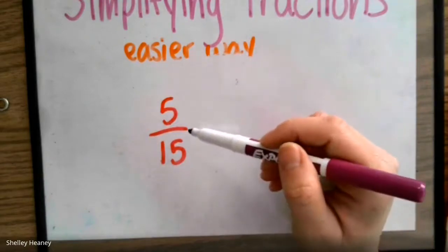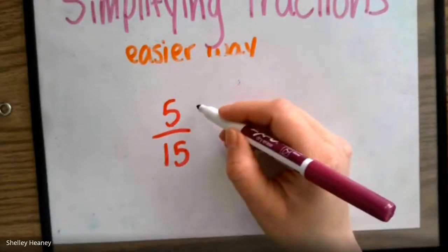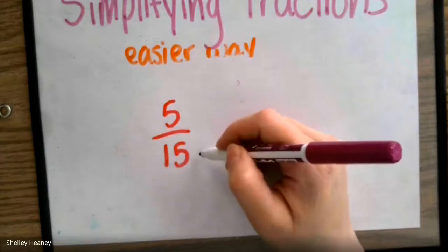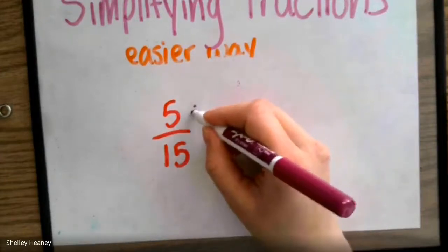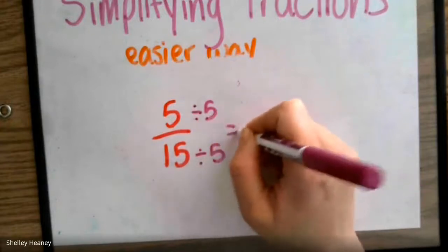What about 4? Can I do 5 divided by 4? I cannot. What about 5? I can do 5 divided by 5. Can I do 15 divided by 5? I can, so let's do 5 divided by 5 and 15 divided by 5.